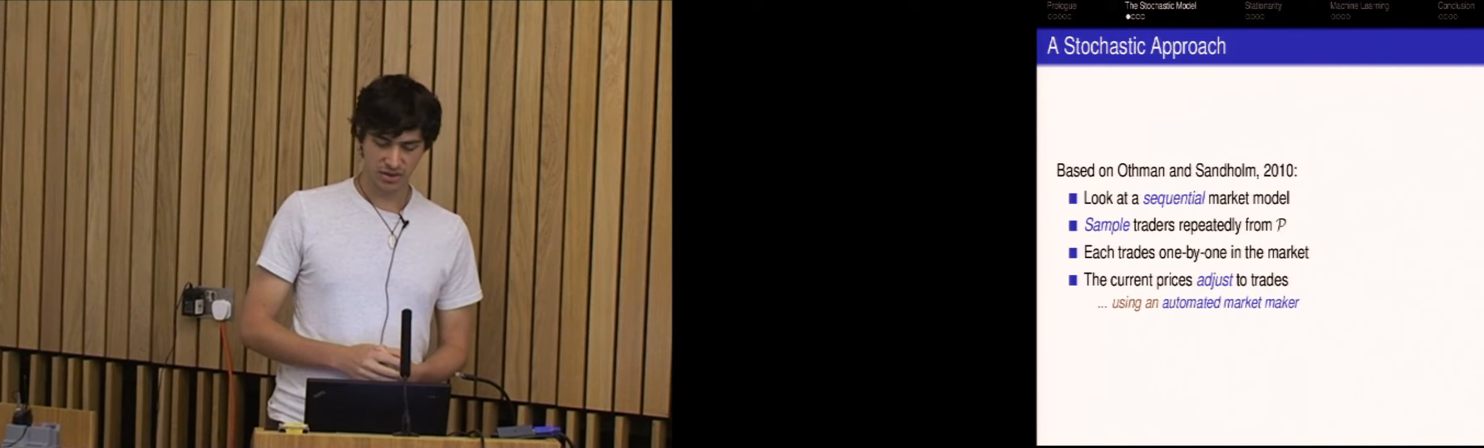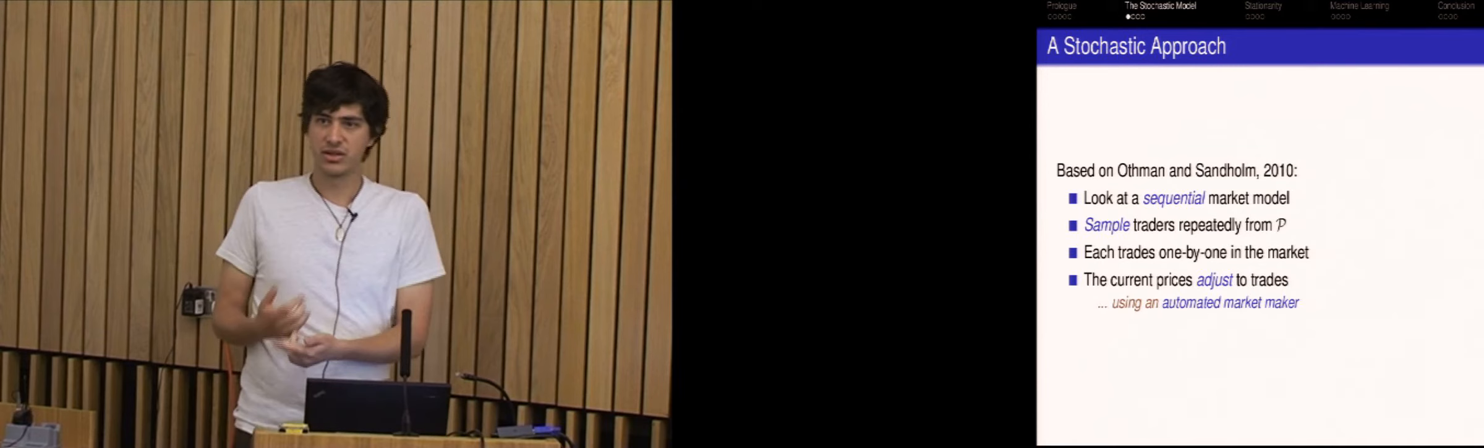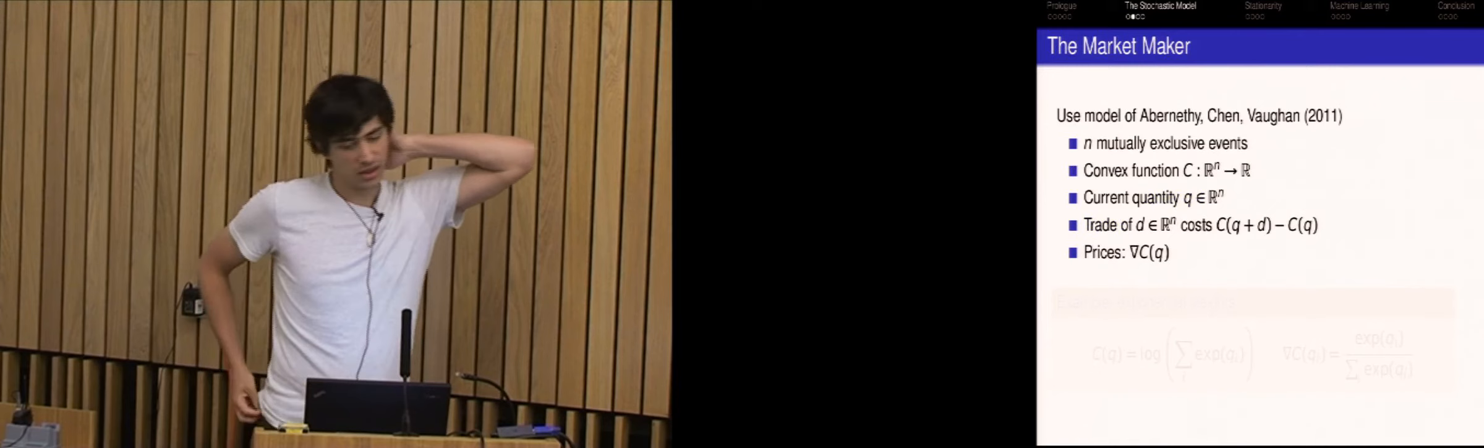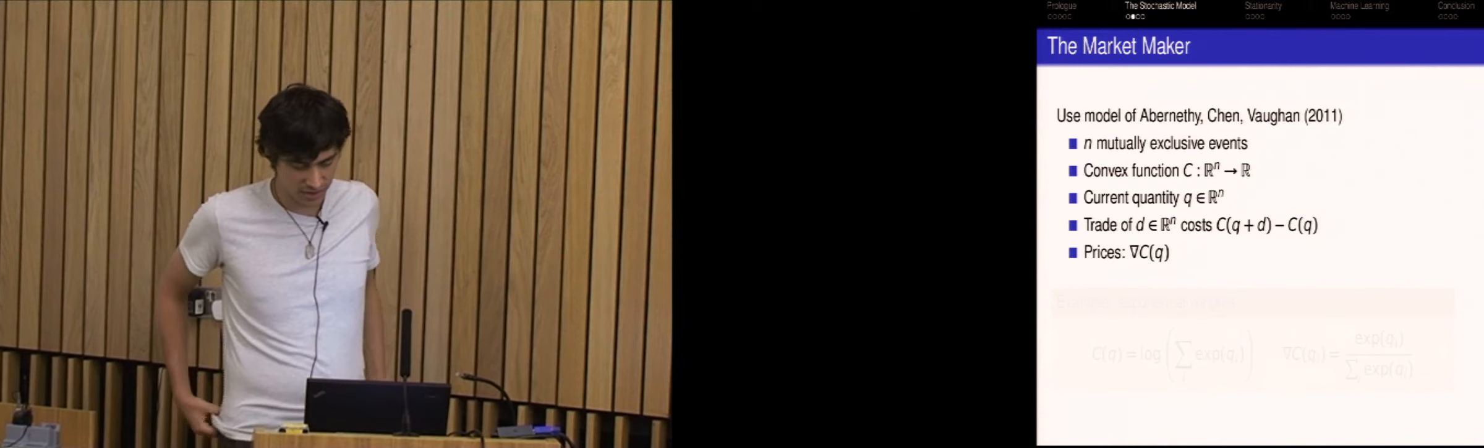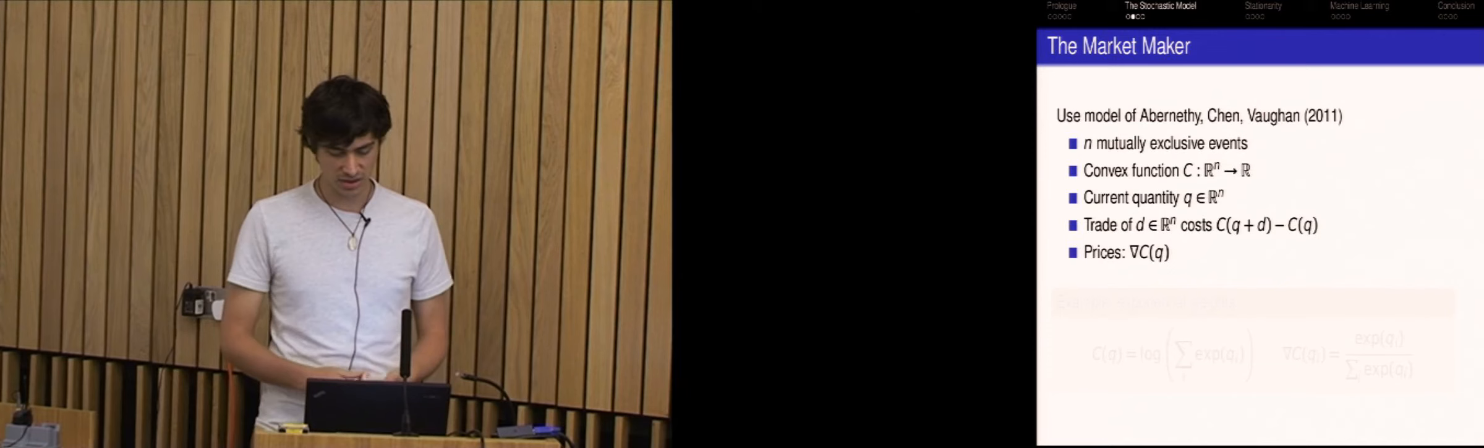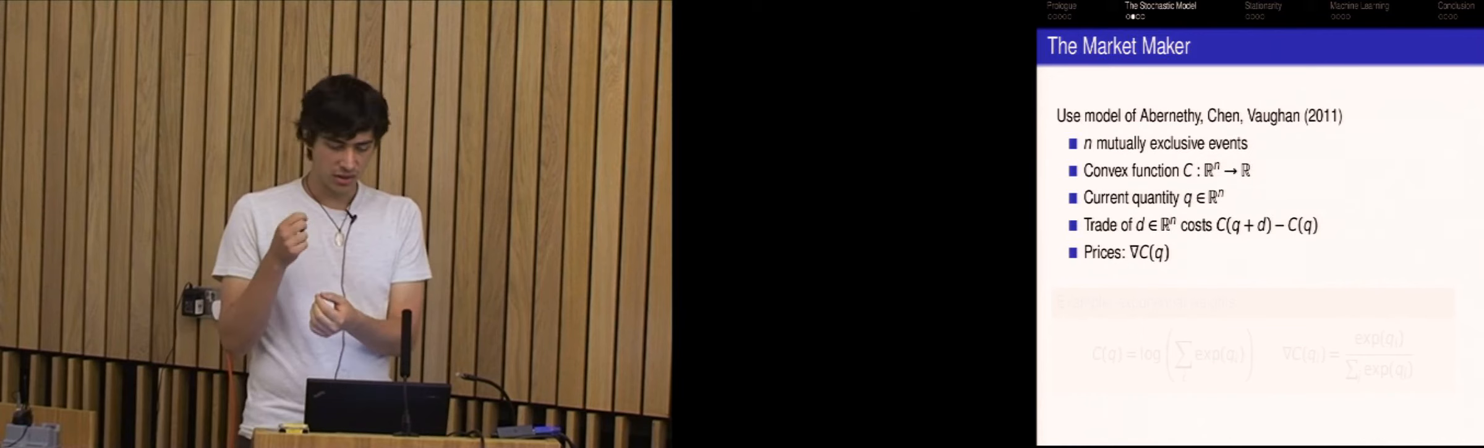And they looked at a sequential market. So instead of this equilibrium analysis where you set a price and ask for all the demands, it's more the market maker kind of setting where you have a sequential market. And we're going to sample traders from our belief distribution one at a time and ask them to trade in the market. And the prices are going to now adjust to each trade. So according to the demand, the prices will fluctuate slightly.